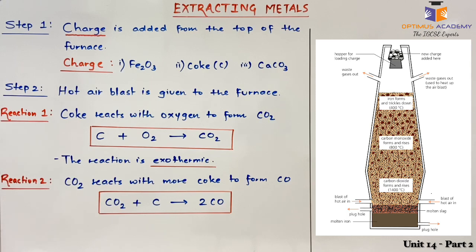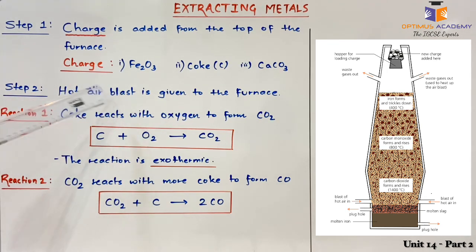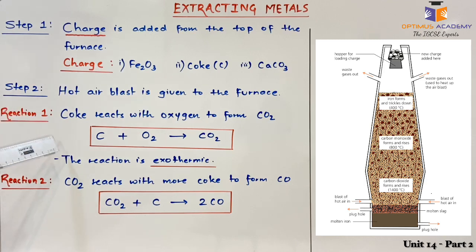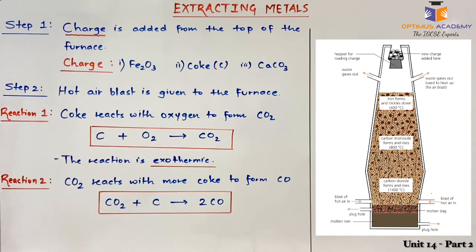The second reason is that we have to maintain a high value of temperature in the furnace. If we control the supply of air to form carbon monoxide, the required temperature will not be reached. Hence, we let this first reaction take place wherein carbon reacts with oxygen to form carbon dioxide.